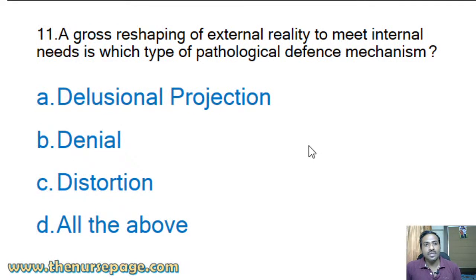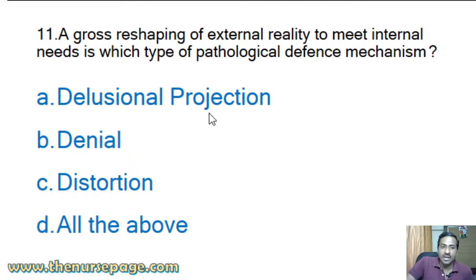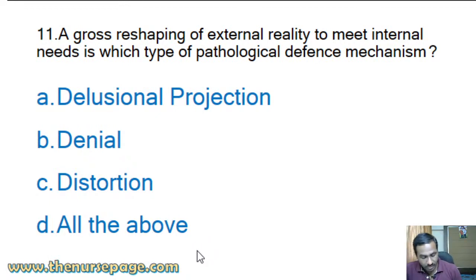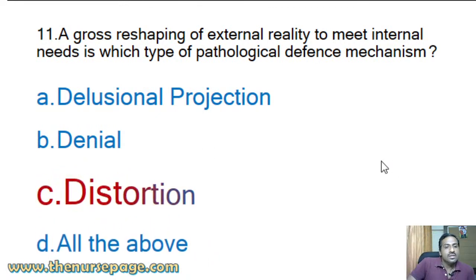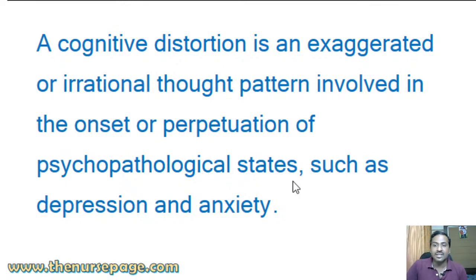Next question: 'A gross reshaping of external reality to meet internal needs is which type of pathological defense mechanism?' Options: delusional projection, denial, distortion, all of the above. The answer is distortion. A cognitive distortion is an exaggerated or irrational thought pattern involved in the onset or perpetuation of psychopathological states such as depression and anxiety.